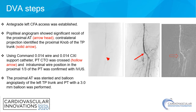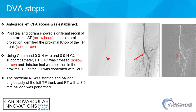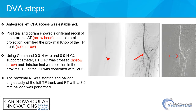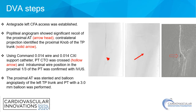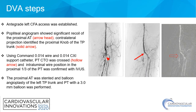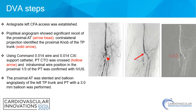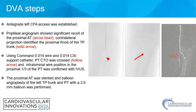Antegrade left CFA access was established. Popliteal angiogram showed significant recoil of the proximal AT and contralateral projection identified the proximal knob of the TP trunk. Using a Command 0.14 wire in a CXI 0.14 support catheter, the PT-CTO was crossed as shown on the third column. Intraluminal wire position in the proximal one-third of the PT was confirmed with intravascular ultrasound. The proximal AT was stented with a coronary EES and balloon angioplasty of the left TP trunk and PT was performed with a 3 mm balloon.